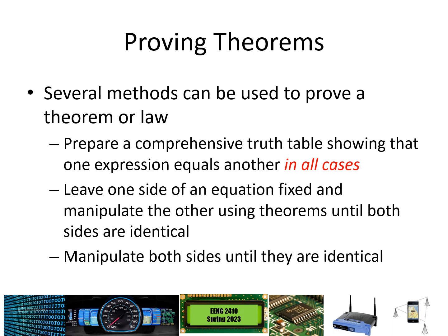So how do you prove a theorem to be true? One way is to provide a comprehensive truth table that shows the left-hand side and right-hand side are equal in every possible scenario. As long as the two columns are equal for every possible input, that proves the theorem. The other way is to leave one side of an equation fixed and manipulate the other side algebraically until the two sides equal one another.